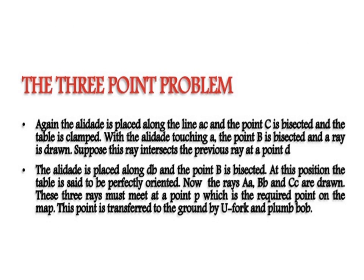The alidade is placed along line AC and point C is bisected, then the table is clamped. With the alidade touching small a, capital B is bisected and a ray is drawn. This ray intersects the previous ray at point D. The alidade is placed along DB and point B is bisected — at this position the table is perfectly oriented. Now the rays AA, BB, and CC are drawn; these rays must meet at point small p, the required position on the map, which is then transferred to the ground by U-fork and plumb bob.